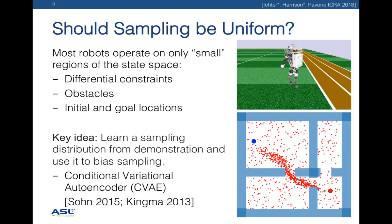A good sample distribution may look something like this for the narrow passage problem — maintaining some uniform coverage to maintain theoretical guarantees and protect against focusing too heavily in one region, while also focusing on the regions of interest.